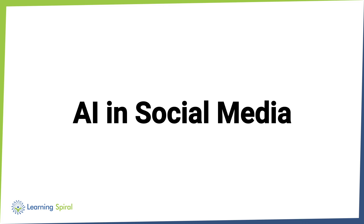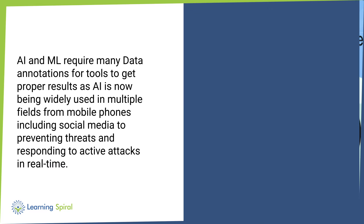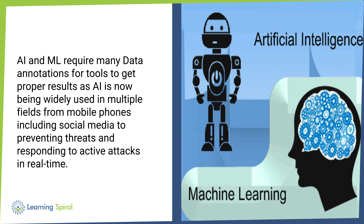AI in Social Media. AI and ML require many data annotations for tools to get proper results, as AI is now being widely used in multiple fields — from mobile phones including social media, to preventing threats and responding to active attacks in real time.